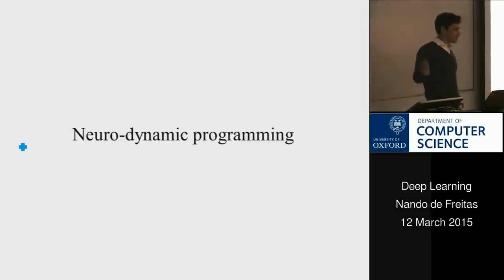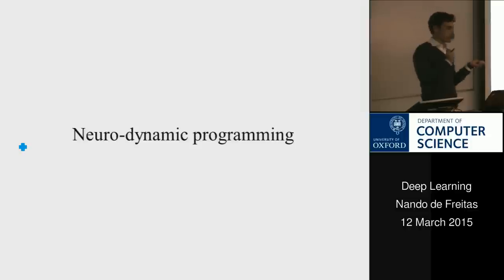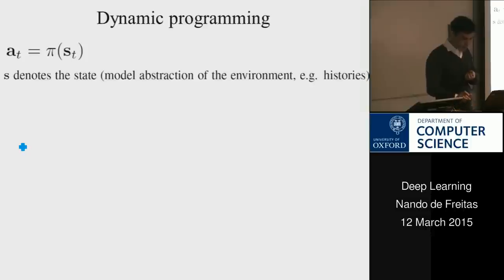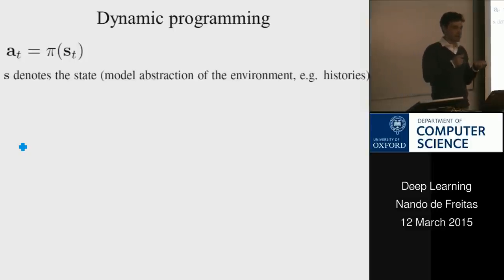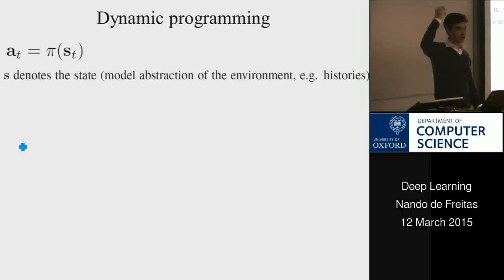We've seen the direct policy search way, where the object of interest is a policy — a strategy that takes histories and chooses an action, or a summary of the history and chooses an action. From now on I'm going to think of policies as mappings that take some state and produce some action. The state could be histories, but it could also be something else — latent variables, neural firing rates, whatever information is stored in memory that determines which action I'm going to choose.